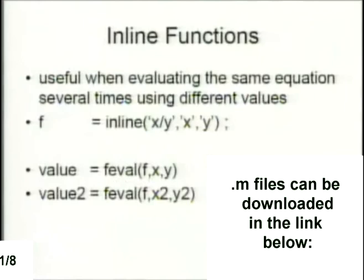Inline functions are what I like to use when doing something like running Runge-Kutta fourth order. When you use the same equation several times, it's easier to make it an inline function — you can change one line once and that equation is changed everywhere in the script. The syntax is: inline, the equation in single quotes, then a comma, then the variables in single quotes separated by commas. To evaluate it, you do value equals feval, the function name, and the variable.